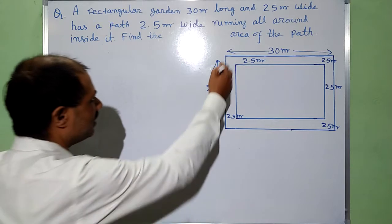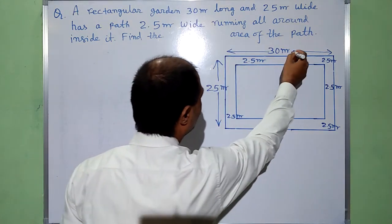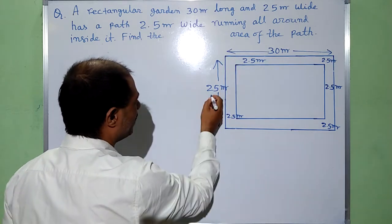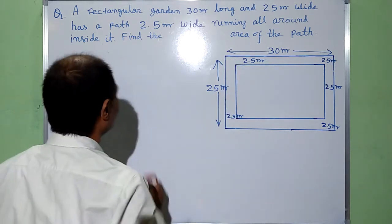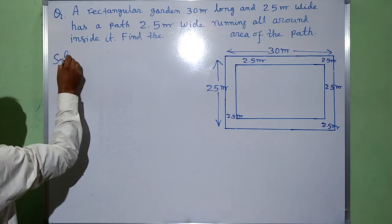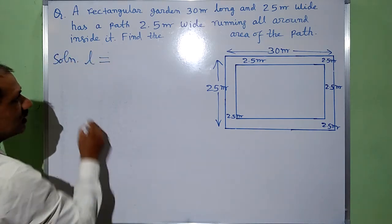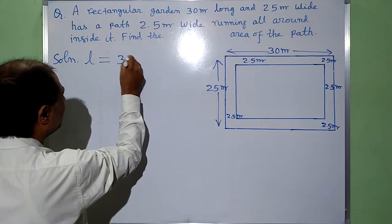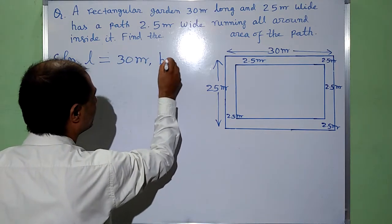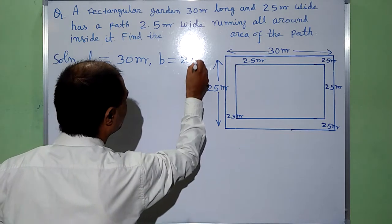This is a rectangular garden. Its length is 30m and its width is 25m. Solution: length is equal to 30m, breadth is equal to 25m.